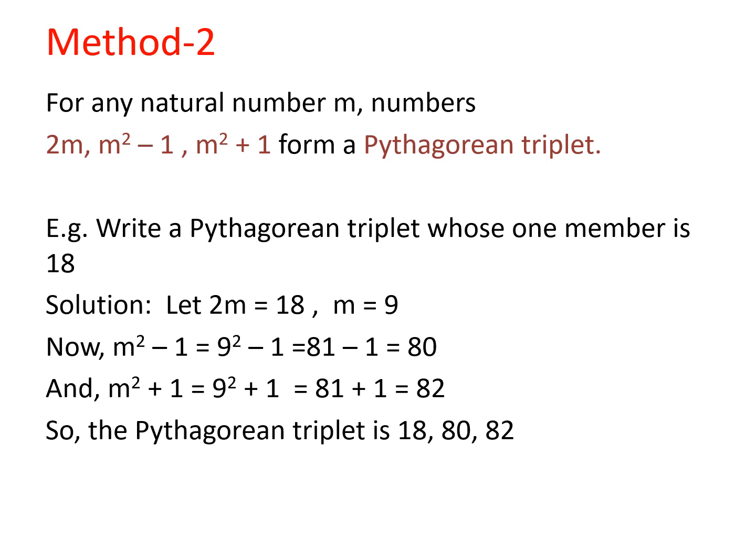So since 18 is an even number, we can take 2m = 18, which is one of the members of the triplet, so m = 9. Now calculating the values of m² - 1 and m² + 1, we will get 80 and 82. And hence the Pythagorean triplet will be 18, 80, and 82.